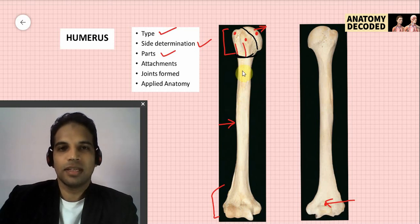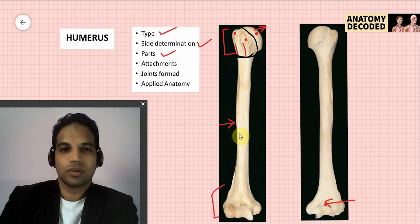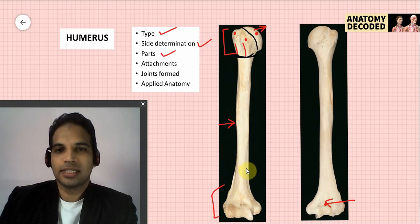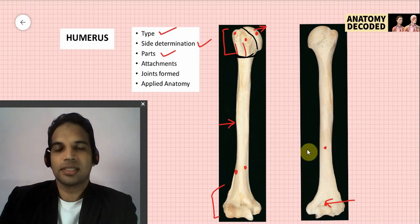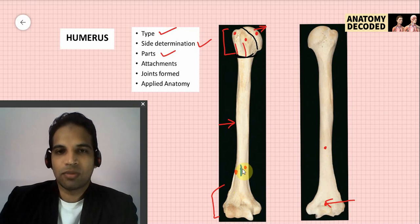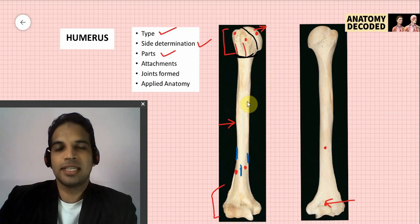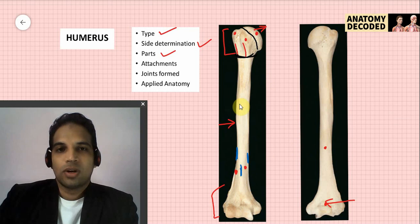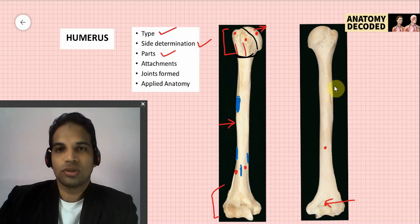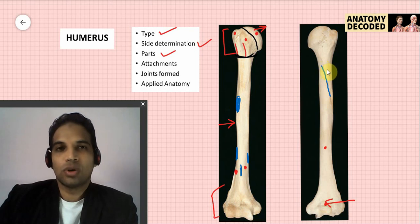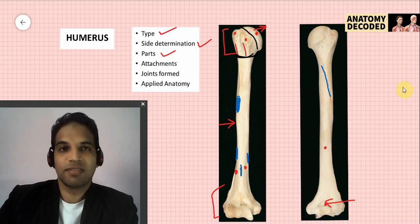The upper half of the shaft of the humerus is circular; the lower half is triangular with three surfaces — anteromedial, anterolateral, and posterior — and three borders: anterior, medial, and lateral. Along the anterolateral surface is the deltoid tuberosity. Along the posterior shaft is the radial groove, which lodges the radial nerve.